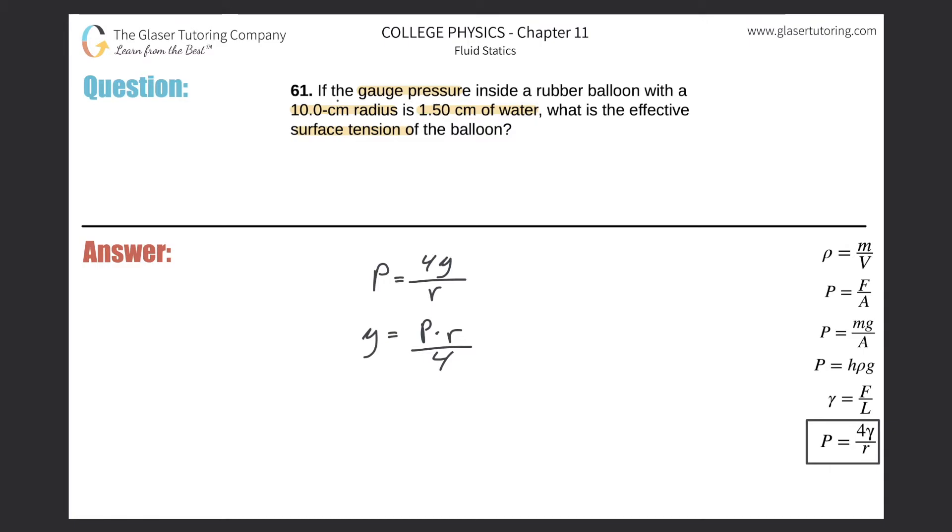You can do the conversion by using this formula down here on the right hand side. This formula relates pressure to the height of an object as a function of its density. So we're talking about water, so in terms of the pressure that a 1.5 centimeter column of water will exhibit.